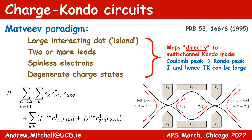This is important because it means that the resulting Kondo temperatures characterizing the onset of strong correlation physics can also be large. In particular, this means that the interesting physics we want to look at can be probed at experimental temperatures.